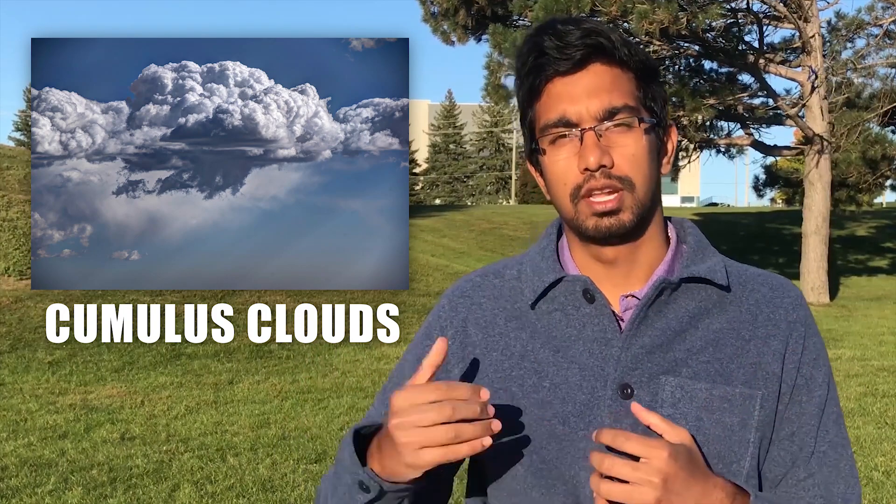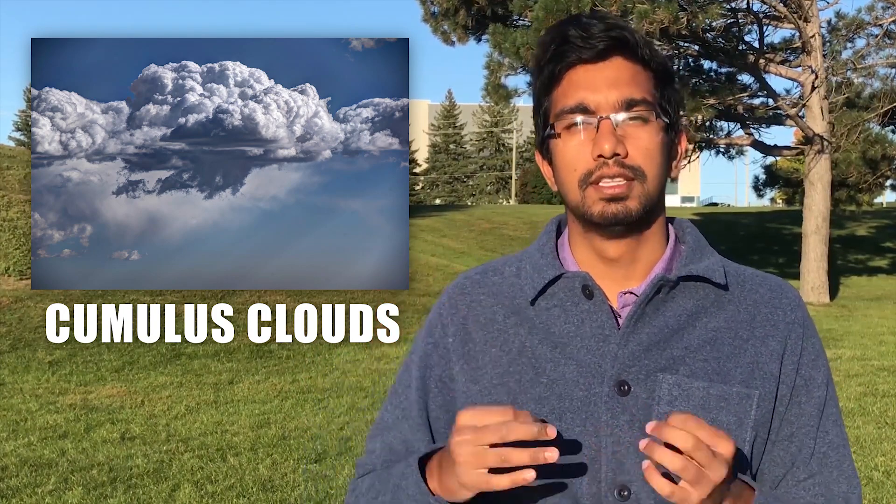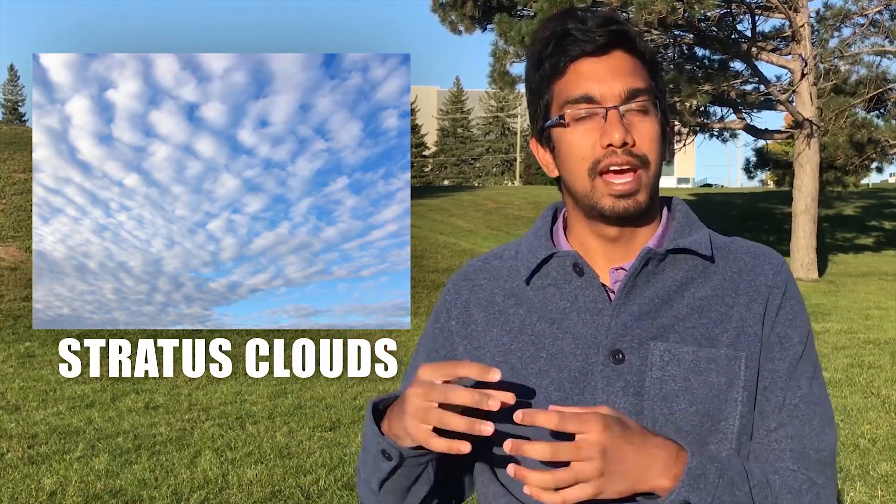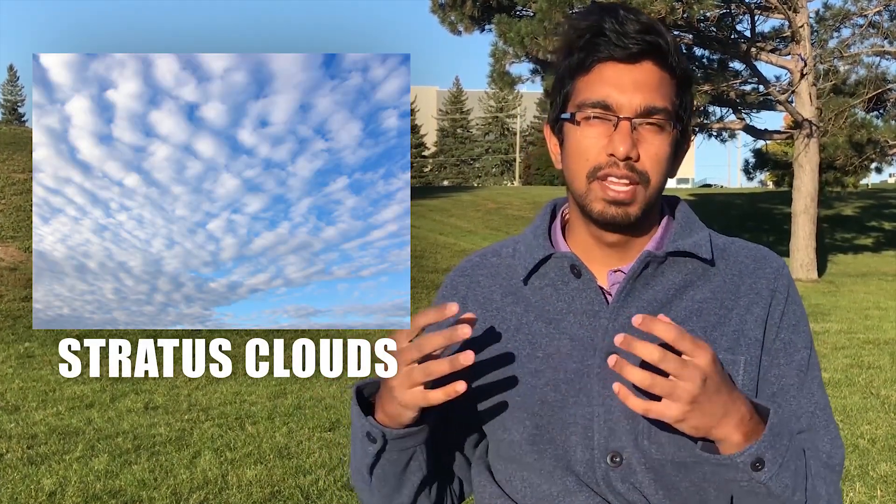On the one hand, we have deep cumulus clouds with large convective updrafts. These clouds tend to produce the biggest droplets because the droplets spend a lot of time inside the clouds themselves. On the other hand, we have stratus clouds, which are typically not as thick and have very weak convective updrafts. The water droplets or the rain droplets that fall from these clouds are not big enough.